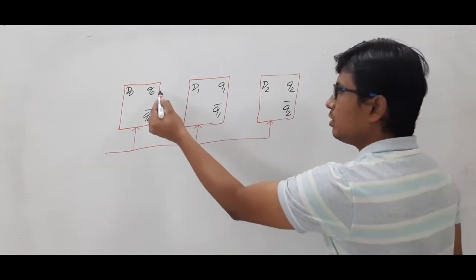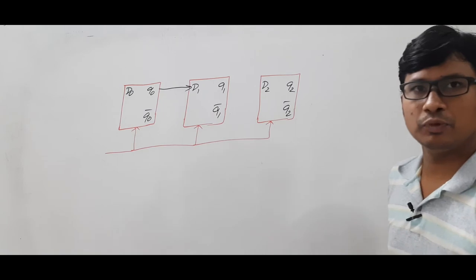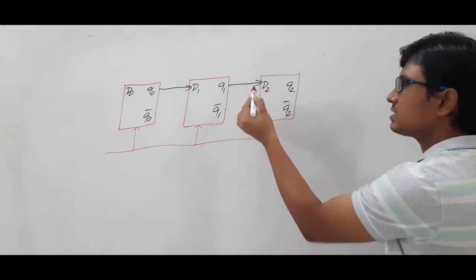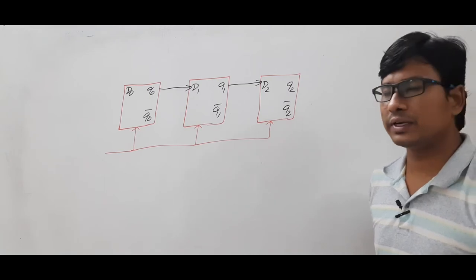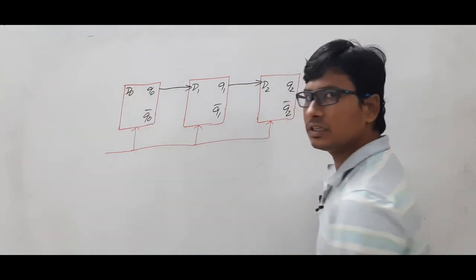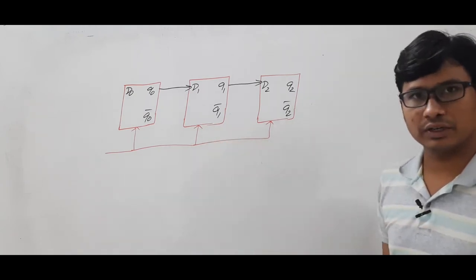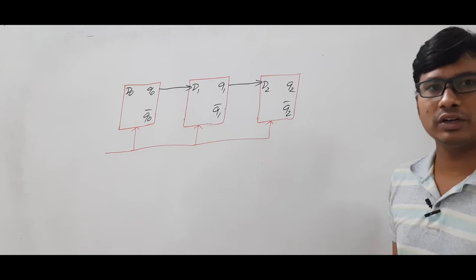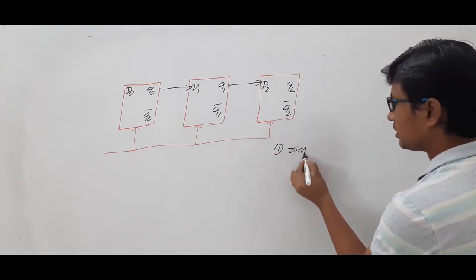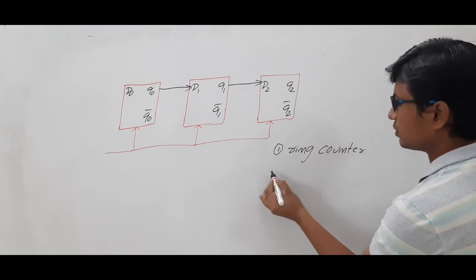In a shift counter, the output of one flip-flop acts as the input to the next: Q0 feeds D1, and Q1 feeds D2. Shift counters are broadly classified into two types: one is the ring counter and the other is the Johnson counter.